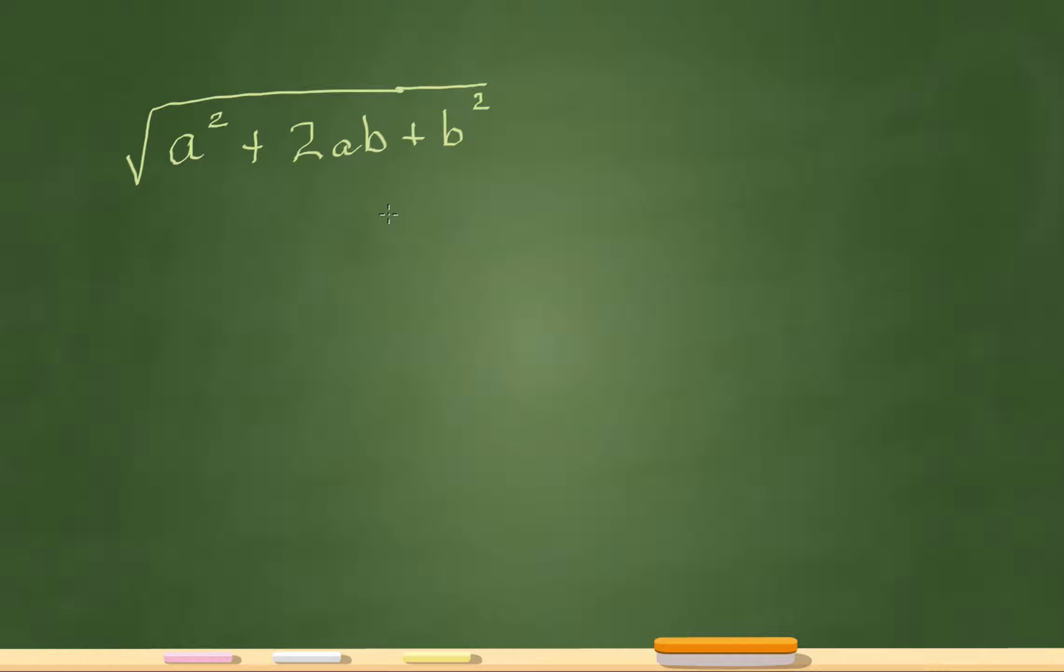But plugging in numbers here works great because there's variables in the question and there's variables in the answer. So that's exactly what I'm going to do. I'm going to make up a number for a and I'm going to make up a number for b and I'm going to solve for that original expression. So let's make a = 2 and let's make b = 3.